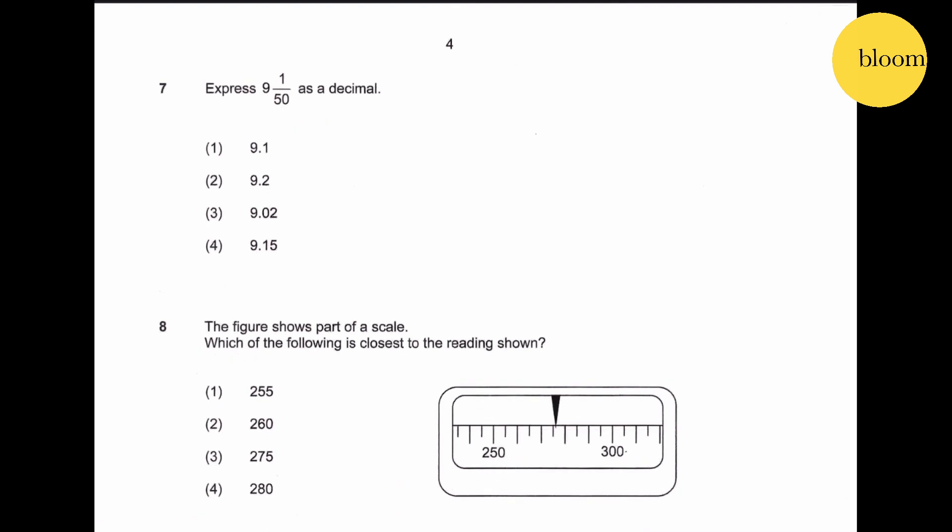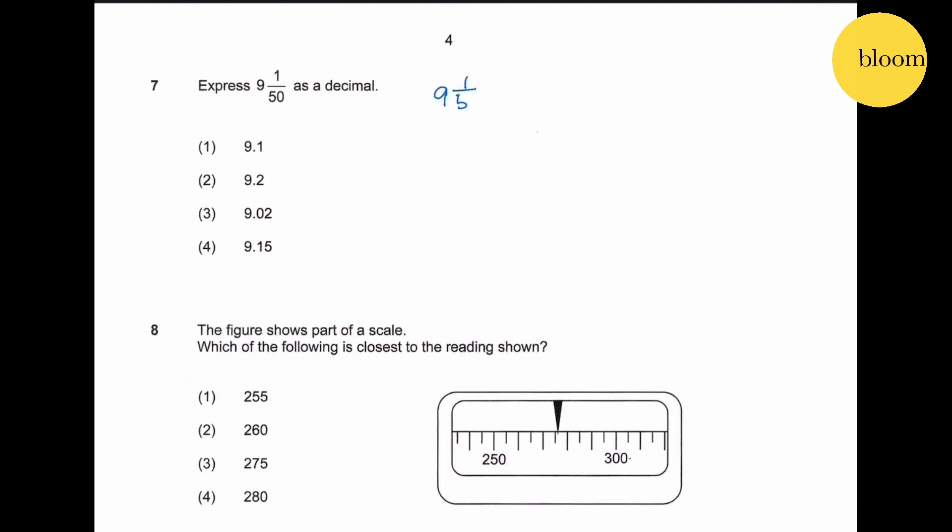Question 7: express 9 1/50 as a decimal. 9 1/50 equals 9 multiplied by 50 plus 1, which is 451 over 50, which gives us 9.02. This is the answer.